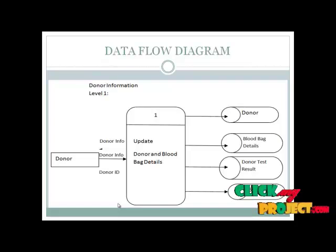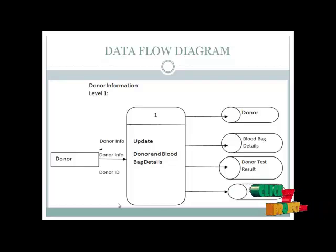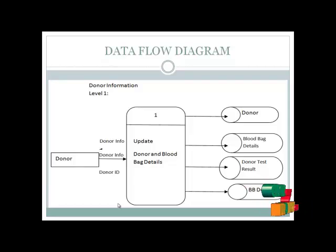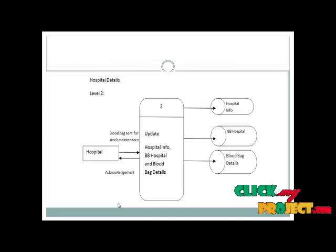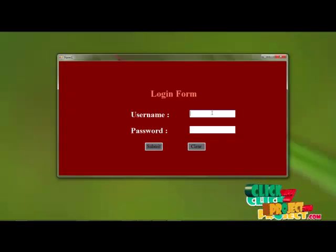Level 1: Donor information. The donor detail will be inserted in different databases like donor, blood bag detail, donor test results, etc. It is used to find out the particular detail of a donor in a clear manner. Level 2: Hospital detail — it is also the same as for donor detail. Let's see the layout of the project.